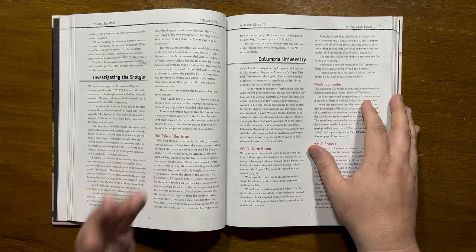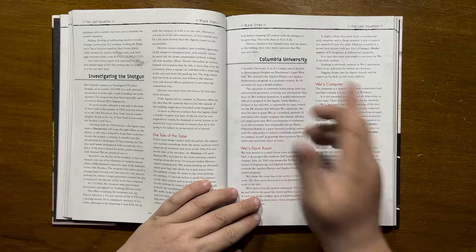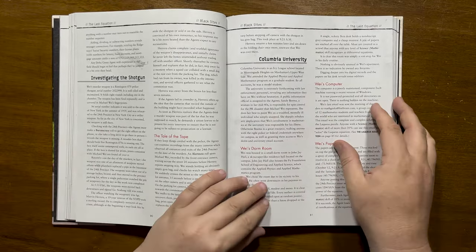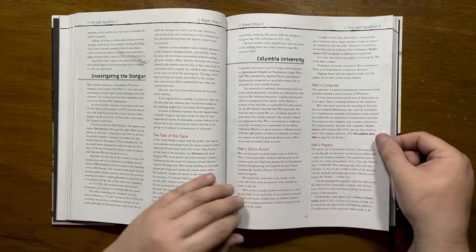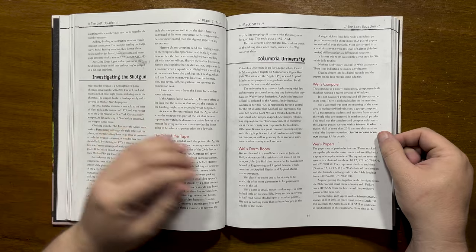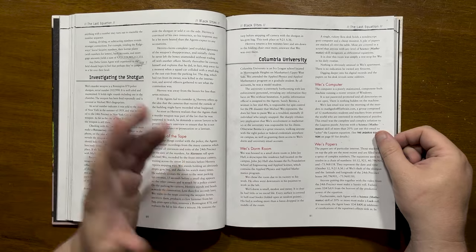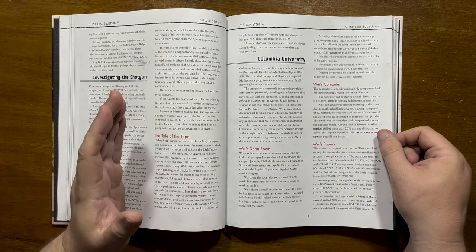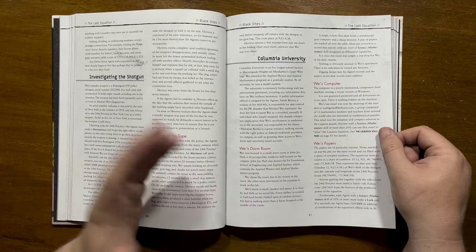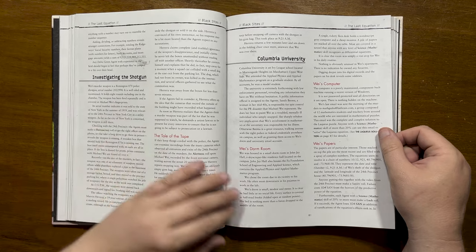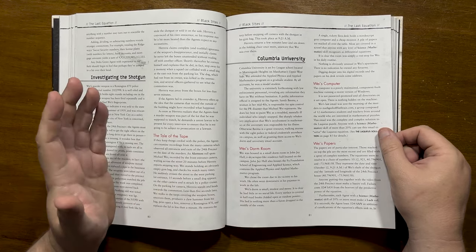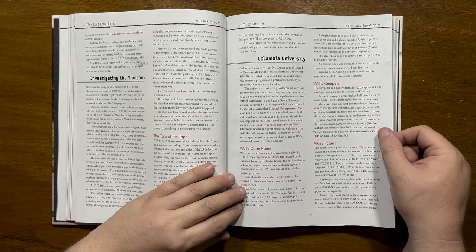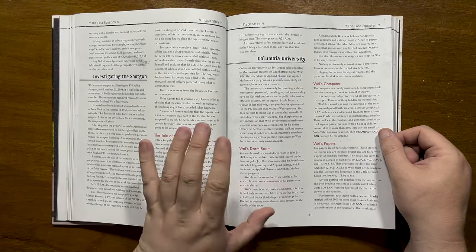The next route of investigation is Columbia University. Upon checking out Wei's dorm room, they discover a small, modest and messy place with a desk covered in piles of paper and scroll which can be identified as differential equations and an old computer. It's clear that he hardly spent any time here. Should the agents investigate his computer, they can see that his last email was sent to 12 mathematics students on his mailing list. This mail contains the complete complex solutions to the Laqueous equation.